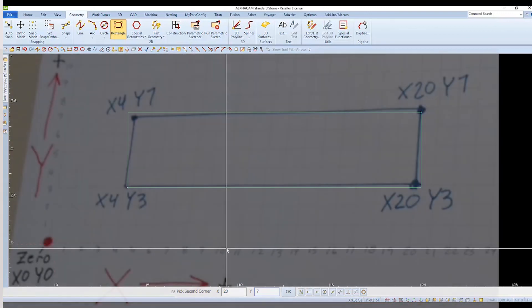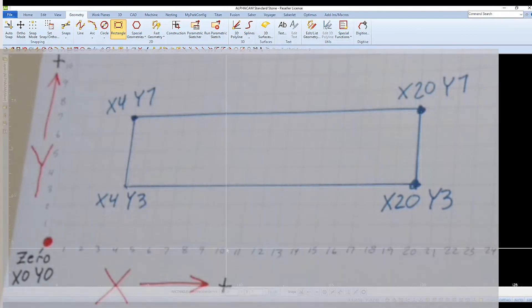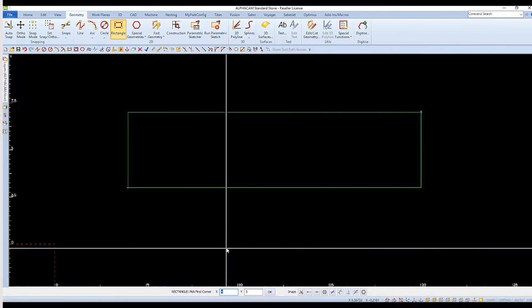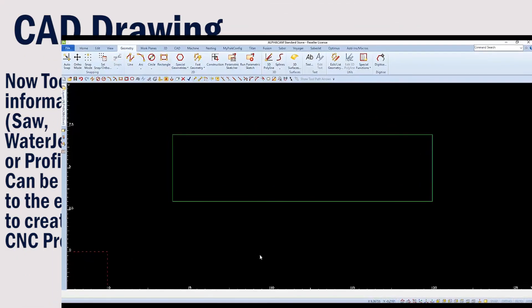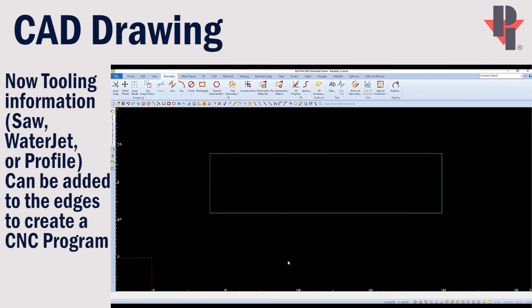So here we were able to go from a simple object into a digital CAD drawing. Now this drawing can be used to apply tooling information to the proper edges, which will then convert into a program for our CNC. Thank you for choosing Park Industries.